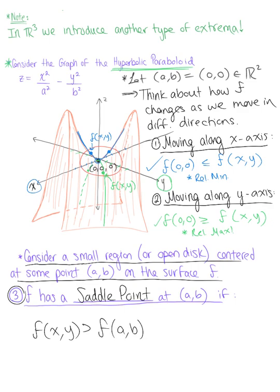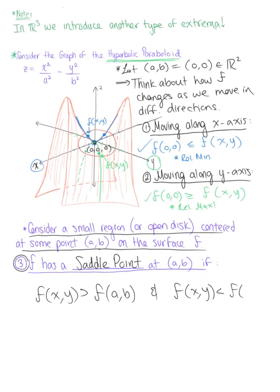for some points and f(x,y) is less than f(a,b) for other points. So sometimes it's a maxima, sometimes it's a minima.